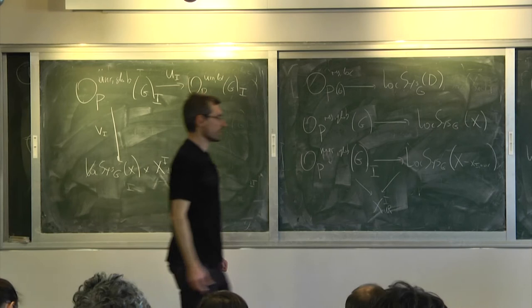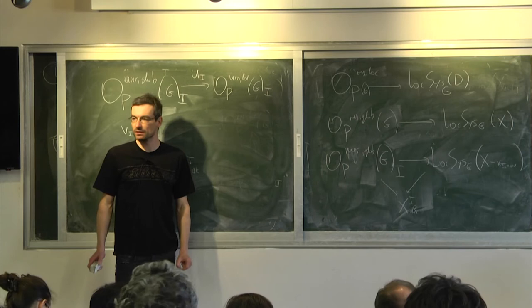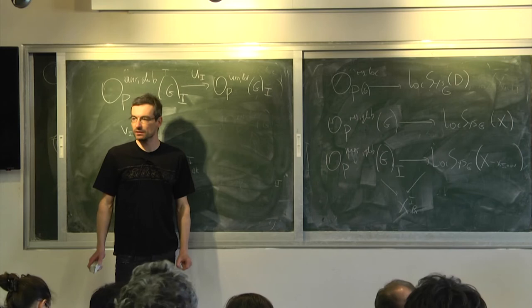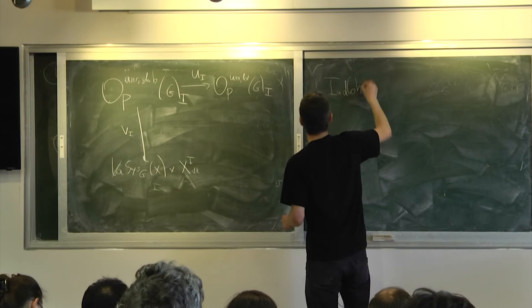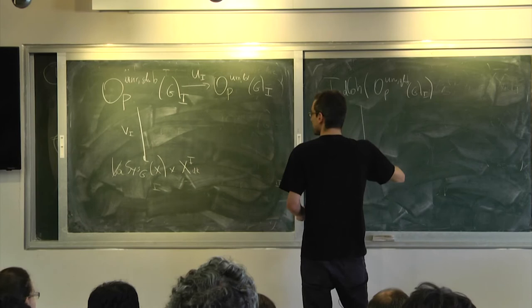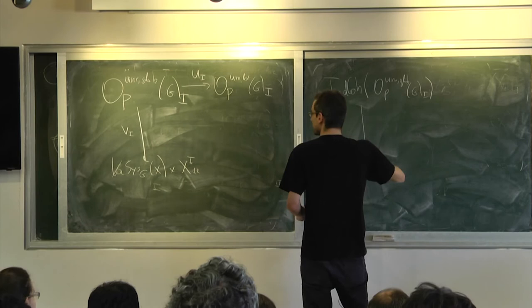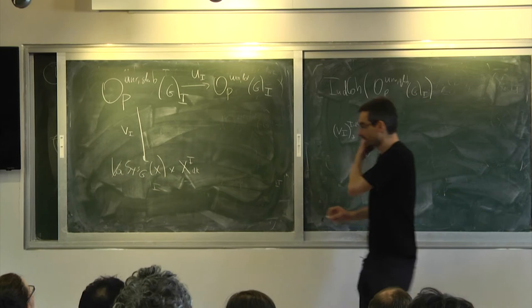I said at the beginning that this category is similar to the Whittaker model, but at this point it might not be obvious. There's no category yet, but there will be. Consider IndCo — and there will be a functor of direct image, IndCo direct image, which a priori goes to IndCo quasi-IndCo of LocSys G-check.